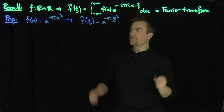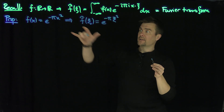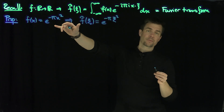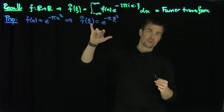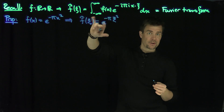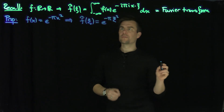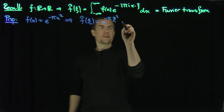This identity is used in our Fourier analysis class as a basis for proving things like the Plancherel theorem, where we use approximations to the identity using this idea. So I want to prove this, and the idea is to consider the function f(z) extended to the complex plane.